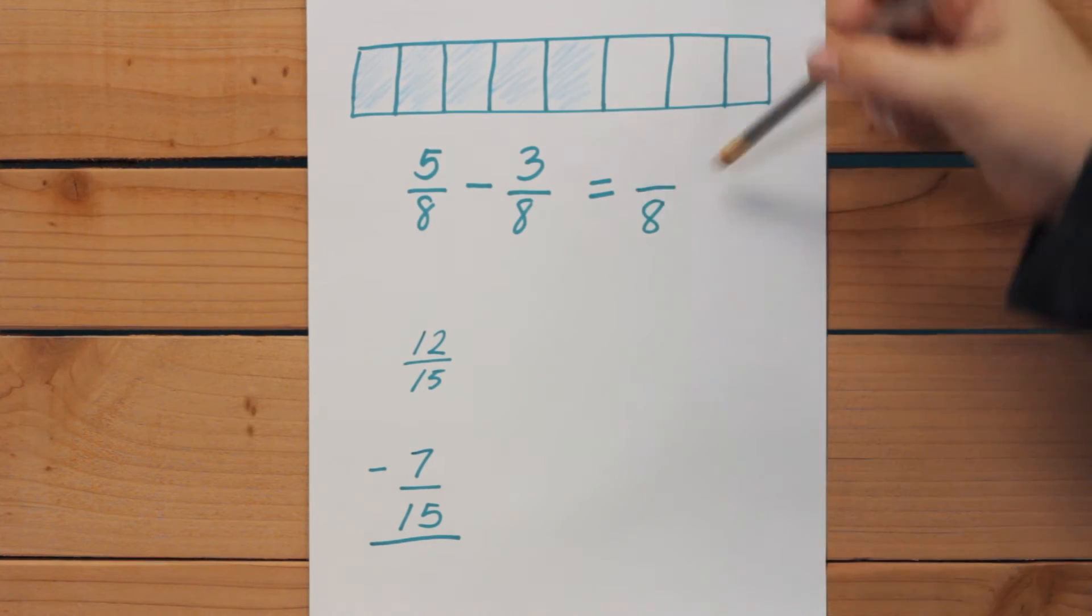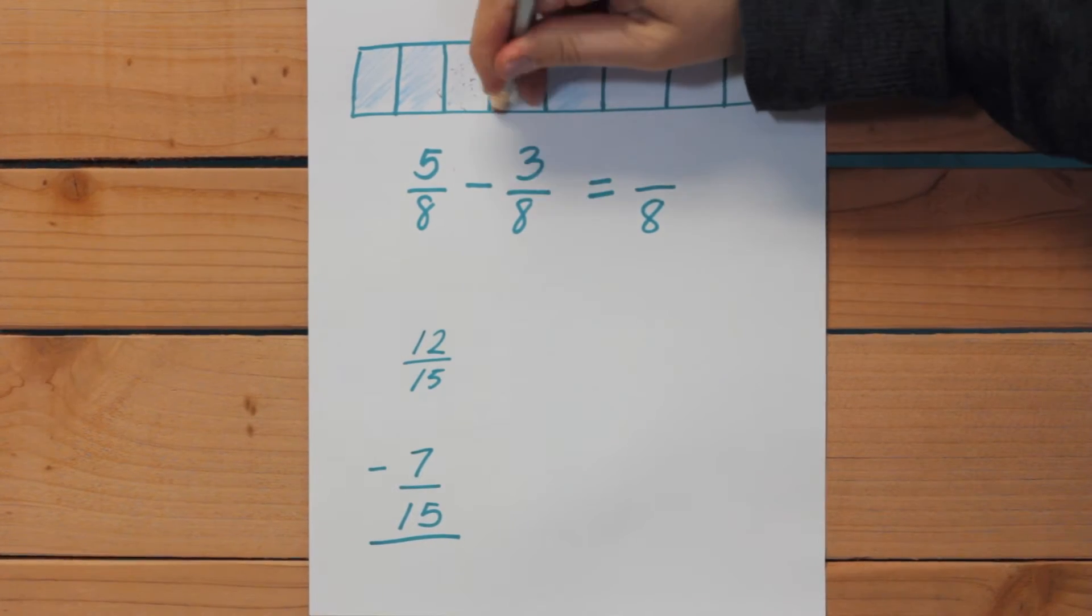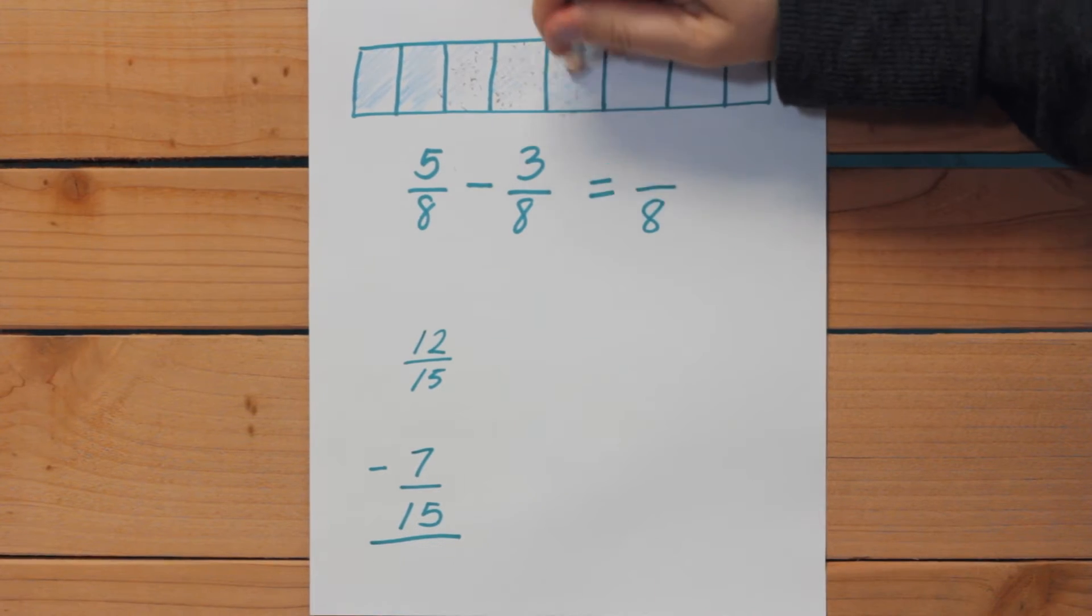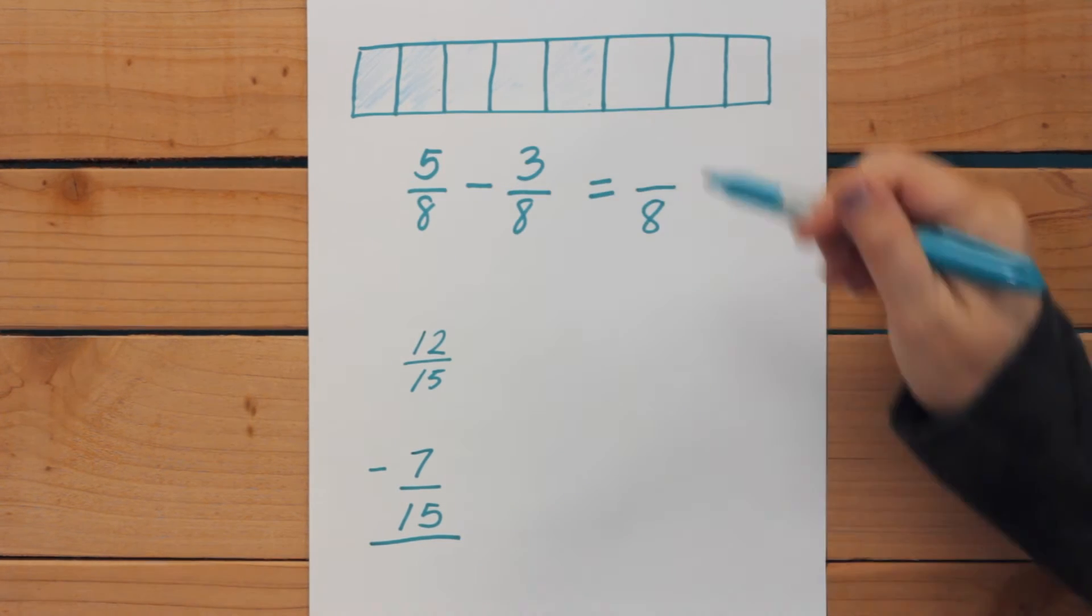Now I'm going to take away 3/8. Take away 1, 2, 3 and how many does that give me? It gives me 1, 2... 2/8.